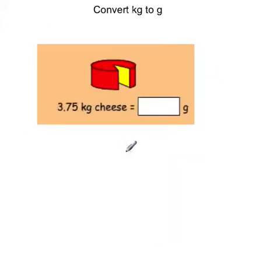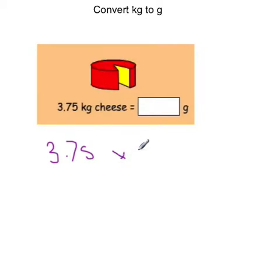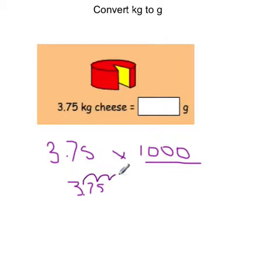So try this one by yourself — pause the video now and convert 3.75 kilograms of cheese into grams. So 3.75 kilograms — we're going to grams, so we multiply by 1,000. Move the numbers forward 3 spaces: 1, 2, 3 — and add a zero there. The answer is 3,750 grams. If you got that, mark it correct.